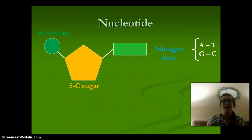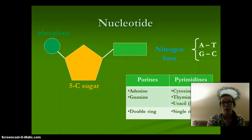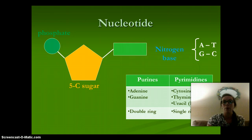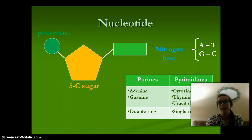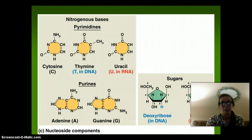There are different nitrogen bases: A and T, G and C. We have the purines, which are adenine and guanine — they are double rings. And then our pyrimidines, which are cytosine, thymine, and uracil. Thymine is in DNA, and uracil is in RNA. The pyrimidines are single-ringed.